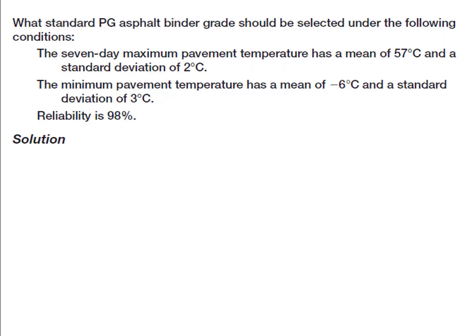Let's see a sample problem. Which binder should be selected under the following conditions? The 7-day maximum pavement temperature has a mean of 57 degrees Celsius and a standard deviation of 2 degrees Celsius. The minimum pavement temperature has a mean of negative 6 degrees Celsius and a standard deviation of 3 degrees Celsius. The reliability level is 98 percent.